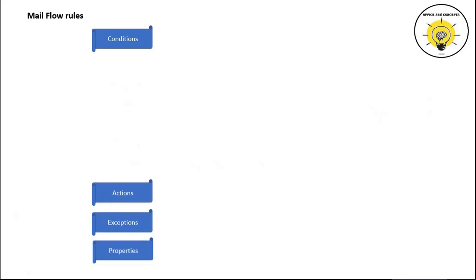You can filter emails on the basis of the To field, From field, and email size, and you can filter the emails on which you want to apply actions. As an administrator, to manage the mail flow, we can also filter emails on the basis of email body or email subject, and there are many more conditions available to manage the mail flow.